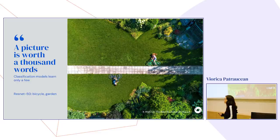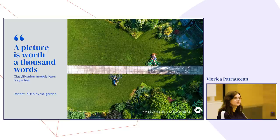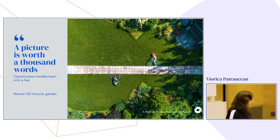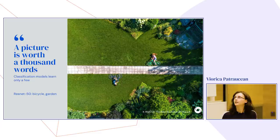Most of the information that we capture about our surroundings comes from our eyes — 80% of the information comes from the eyes. However, classification models can only learn a few words about an image. If you take a particular image and pass it through an image classifier like ResNet50, it will tell you something like 'bicycle' and 'garden.' These are correct answers, but we are far from correctly parsing the scene.